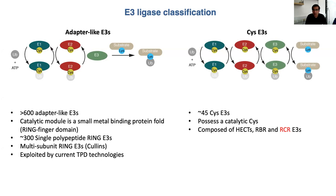We should not forget the CIS E3s — there are about 45 of these. They contain a catalytic system forming a covalent intermediate with ubiquitin and transfer ubiquitin to substrate autonomously; the E2 is completely out of the picture at that step. It was thought that CIS E3s were composed of HECTs — about 28 — and about 14 RBRs (ring between rings). Like adapter E3s they contain a ring finger domain, but this is catalytically inert and linked to catalytic cysteine machinery. We refer to RBRs as ring-linked E3s.